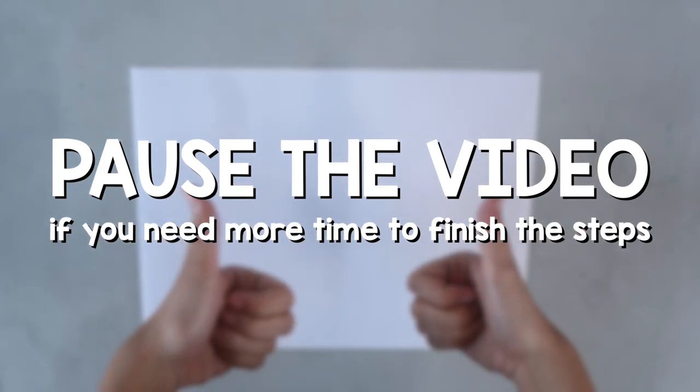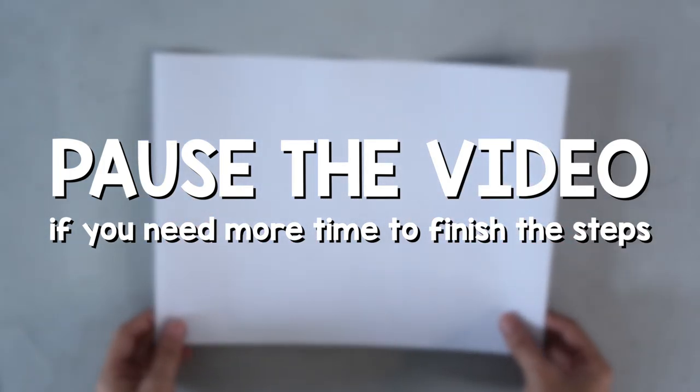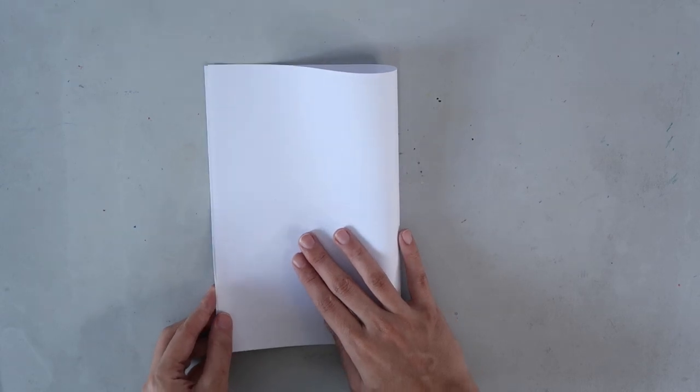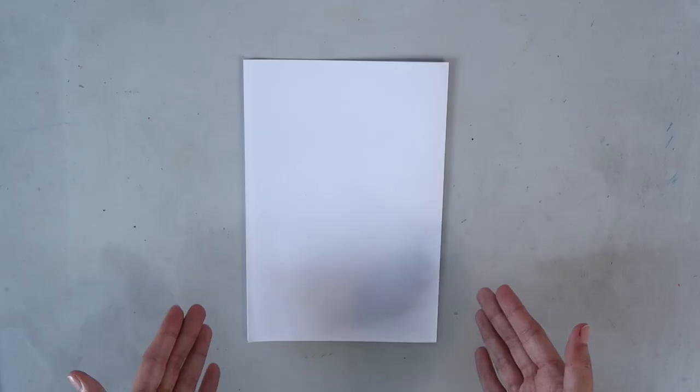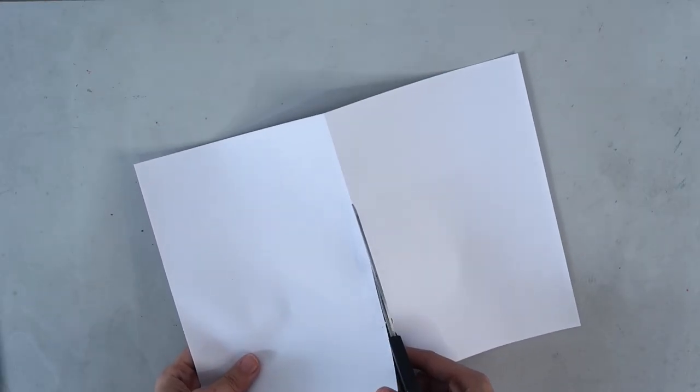Pause the video if you need more time to finish the steps. Let's begin by folding our Oslo paper in half. For this artwork, we're only going to use half of your Oslo paper. You may fold or cut it.